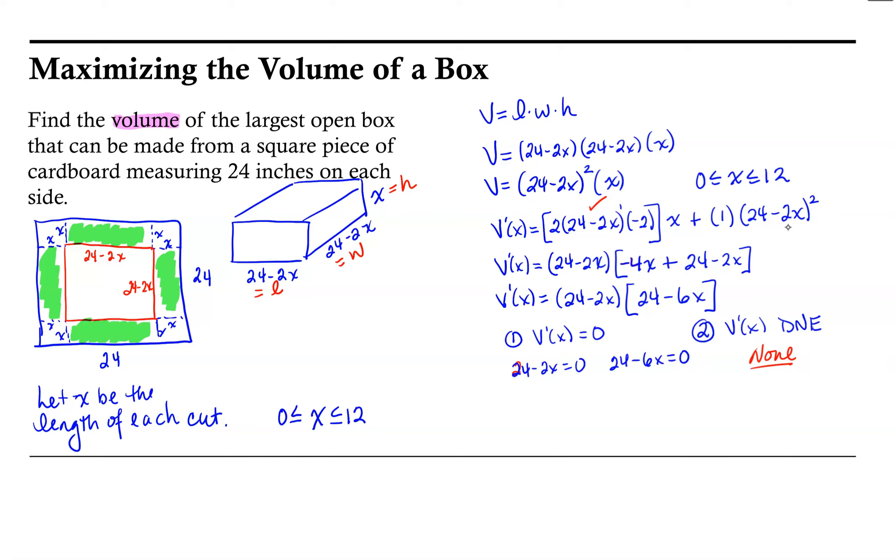So following those two we would have 24 equals 2x if I add 2x to both sides of the equation, and then 12 equals x if I divide both sides of the equation by 2. For the second, if I add 6x to both sides of the equation, I get 24 equals 6x. And then if I divide by 6, I get x equals 4. So critical points, I have two of them. I have x equals 12 and x equals 4.